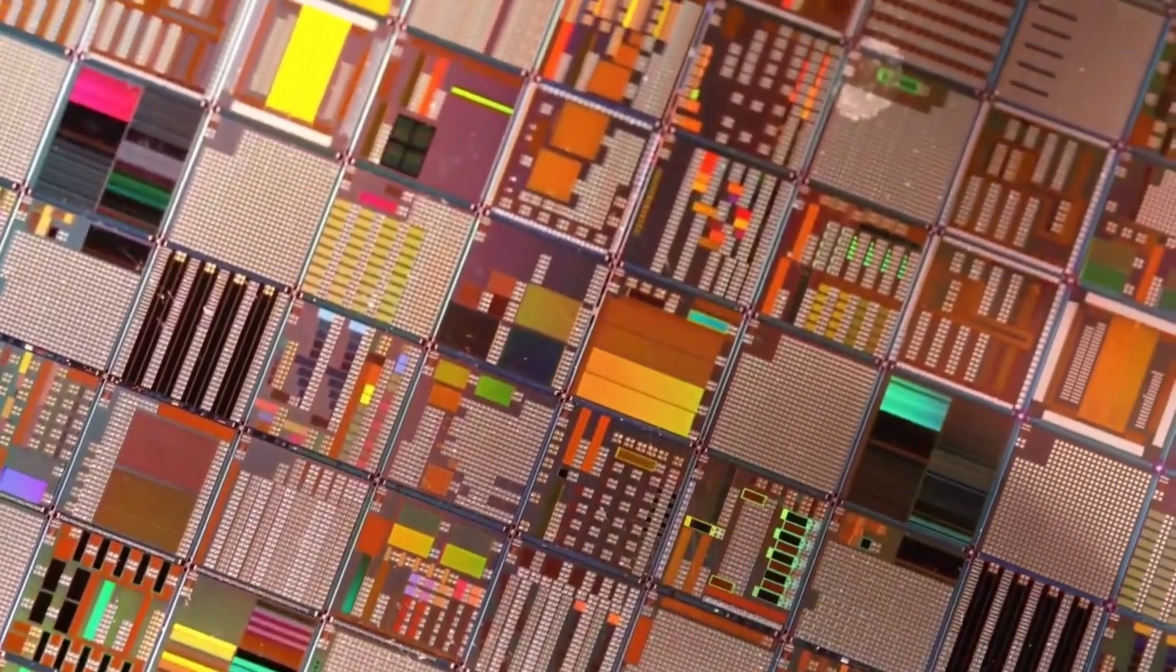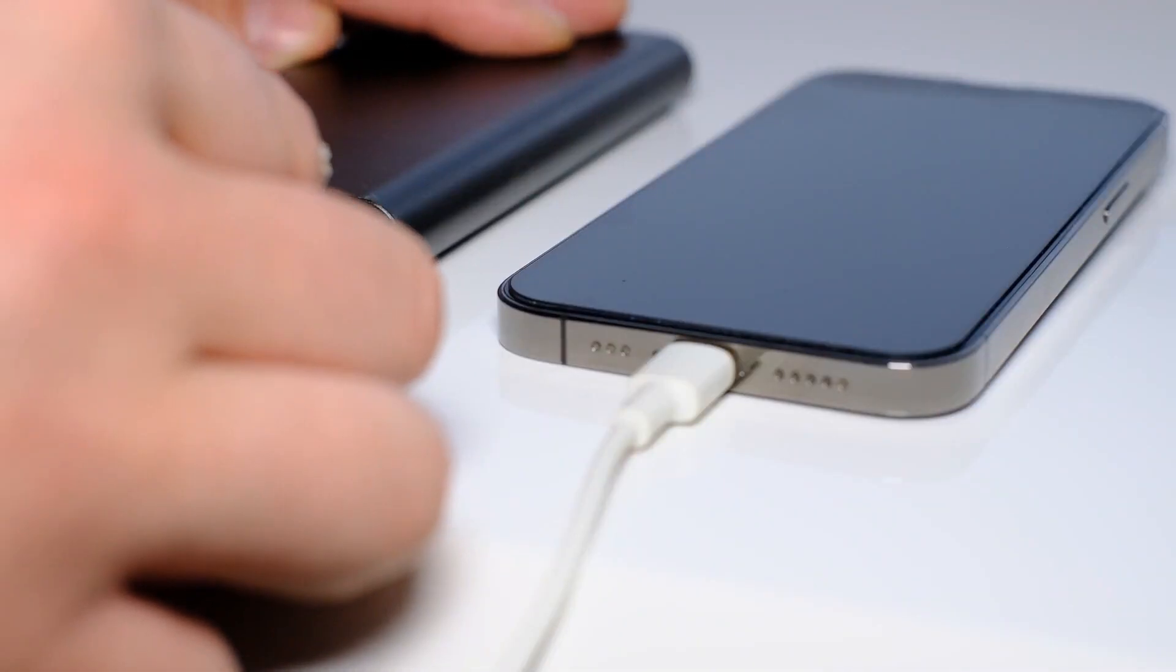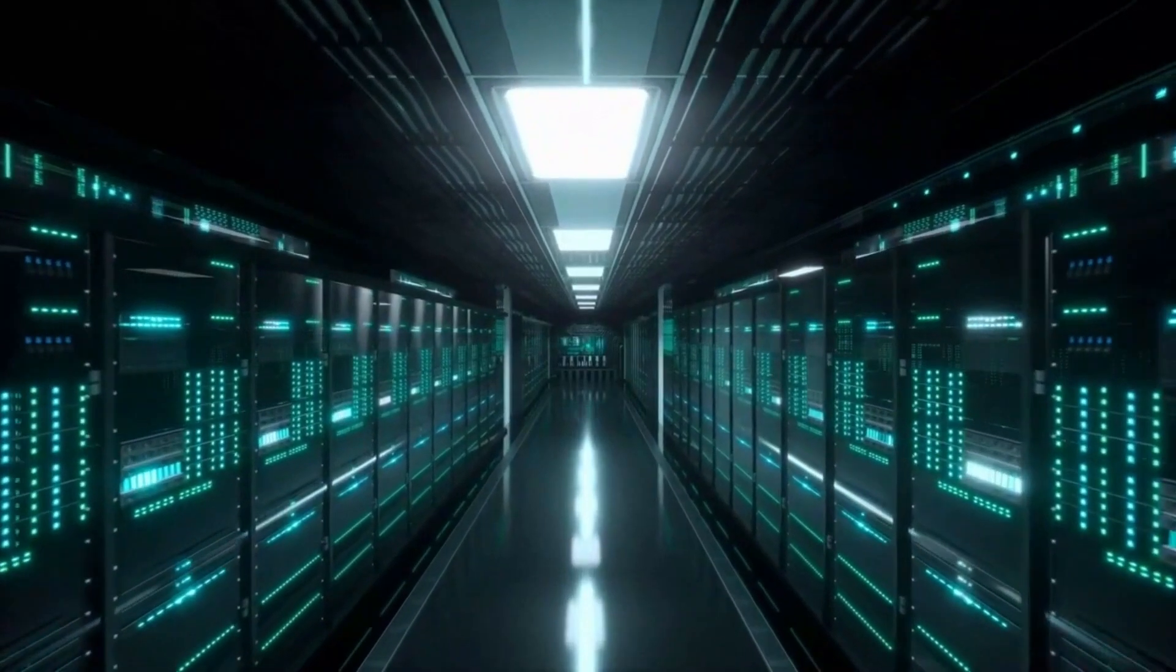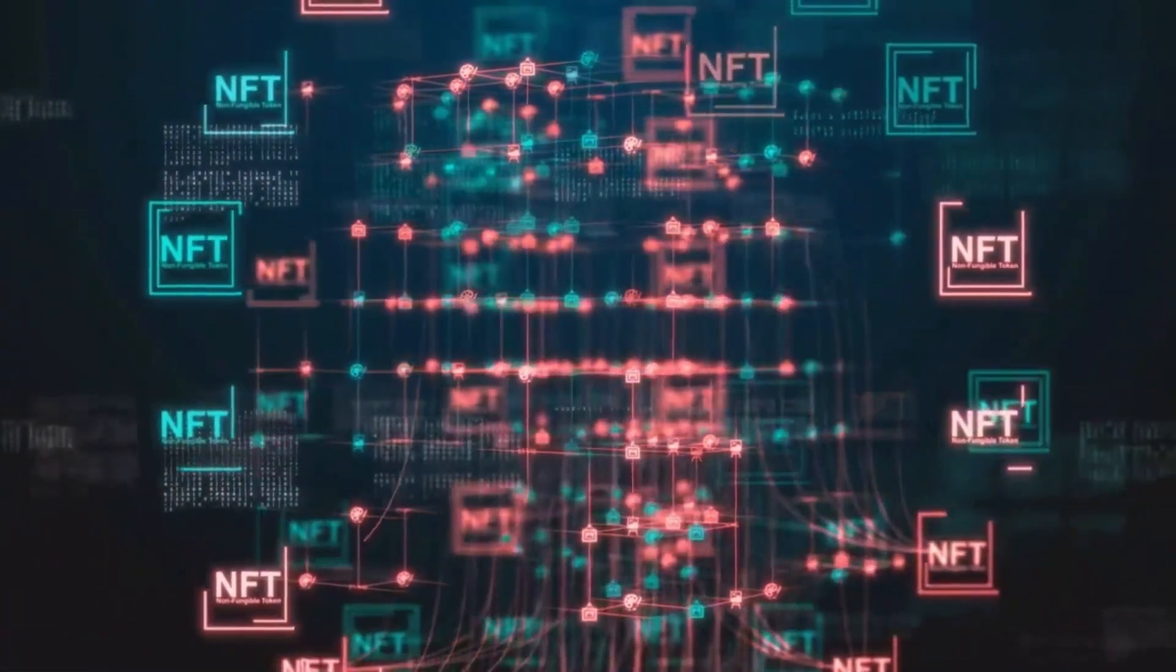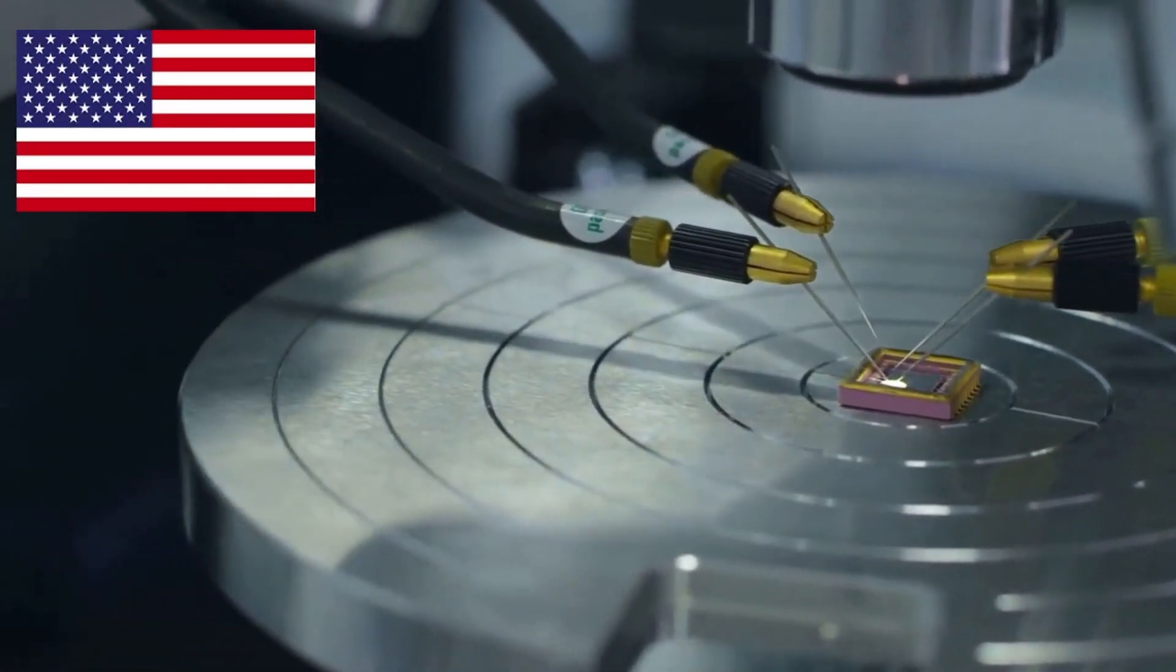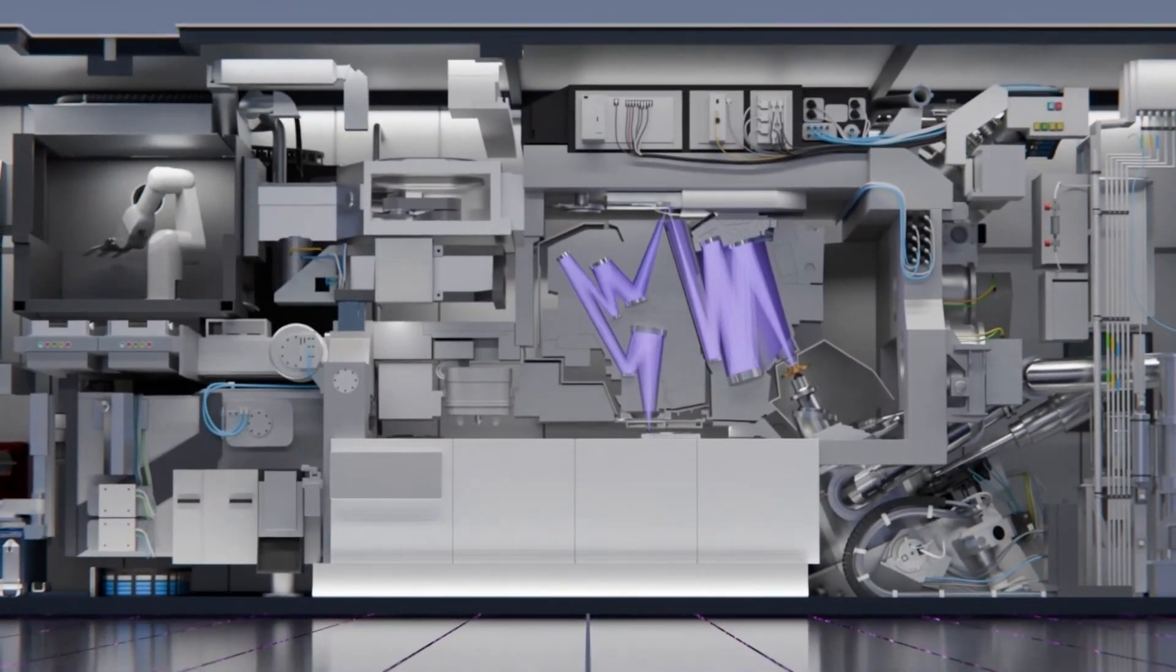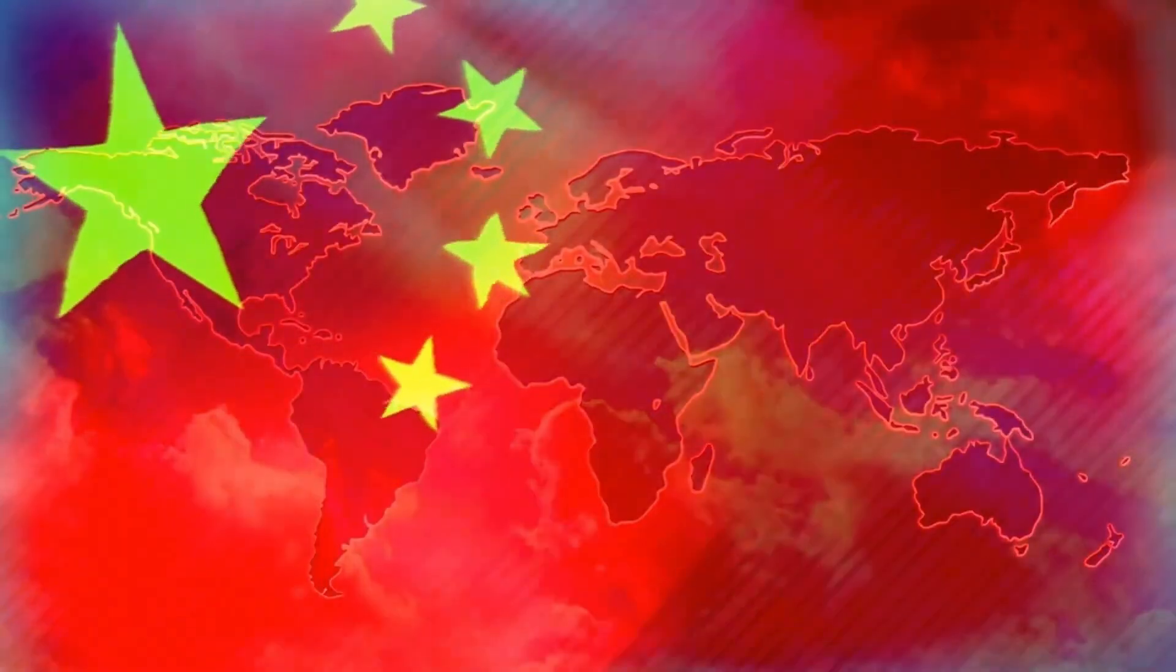To understand why this is so important, we have to remember how critical chips have become in modern geopolitics. Chips run smartphones, AI systems, military equipment, satellites, and supercomputers. Control over chip technology equals global influence. For years, the US and its allies controlled the most advanced chipmaking tools, especially lithography machines, systems that use powerful lasers to print microscopic circuits on silicon wafers.